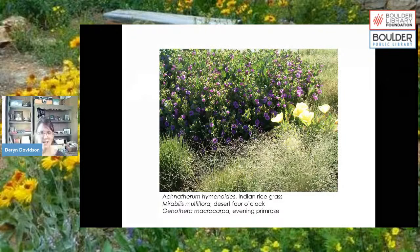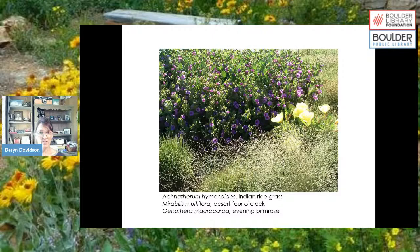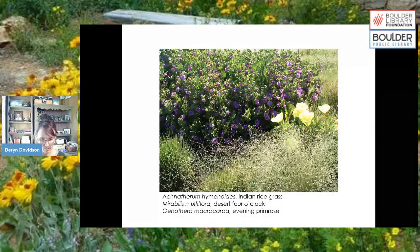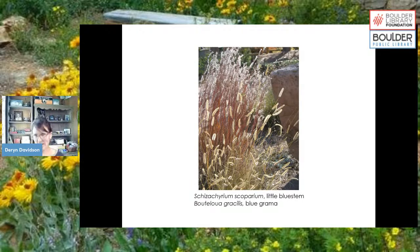Another combination shows Indian rice grass in the foreground — a nice bunch grass with delicate seed heads — alongside a yellow evening primrose in the middle and desert four o'clock in the background, covered in pink-purple flowers. In the back you can also see little bluestem and in the front blue grama. This illustrates how different and versatile grasses can be — they all have different seed heads and colors. Some people think grass is just grass, but there's a lot of variety with our ornamental native grasses.